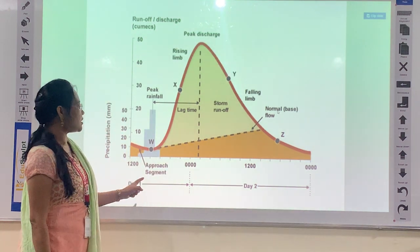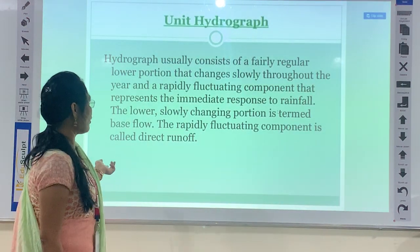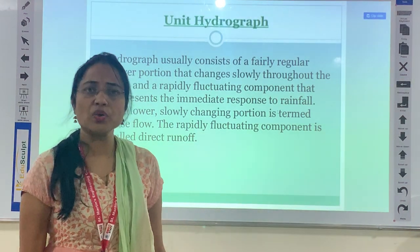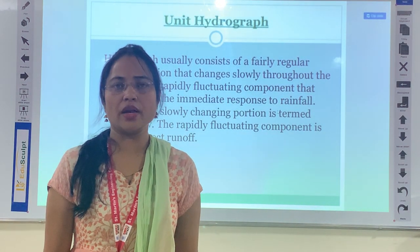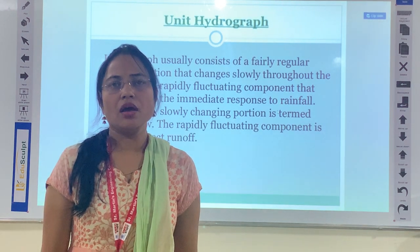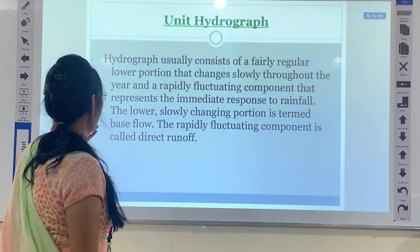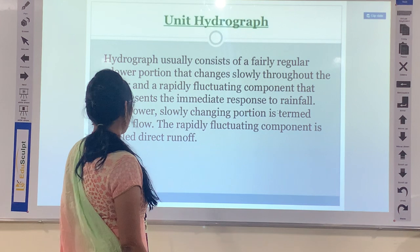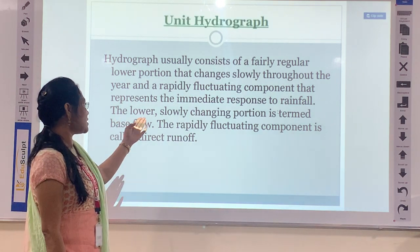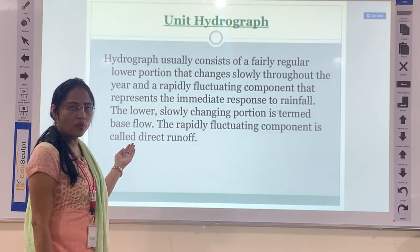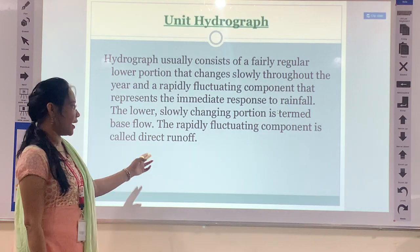Those are the components explained for the hydrograph. Next, we have the unit hydrograph. A unit hydrograph is a hydrograph which represents only one centimeter of a particular rainfall and is developed for any watershed or catchment to analyze peak discharges. A hydrograph usually consists of a fairly regular lower portion that changes slowly throughout the year, and a rapidly fluctuating component that represents the immediate response to rainfall. The slowly changing lower portion is termed base flow, and the rapidly fluctuating component is called direct runoff.